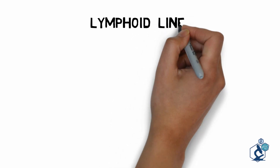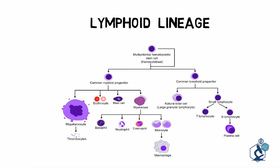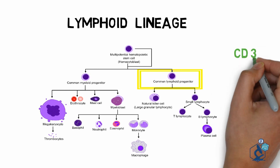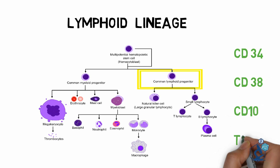Both B and T lymphocytes develop from a lymphoid progenitor cell. Many of you must have heard the word hematogones — these progenitor cells are known as hematogones. These precursors are CD34 positive, CD38 positive, CD10 positive, and TDT positive. These are important because we may get bone marrow samples in cases of leukemia post-treatment. These post-treatment bone marrows, especially in children, have hyperplasia of hematogones, which must be differentiated from leukemic blasts.